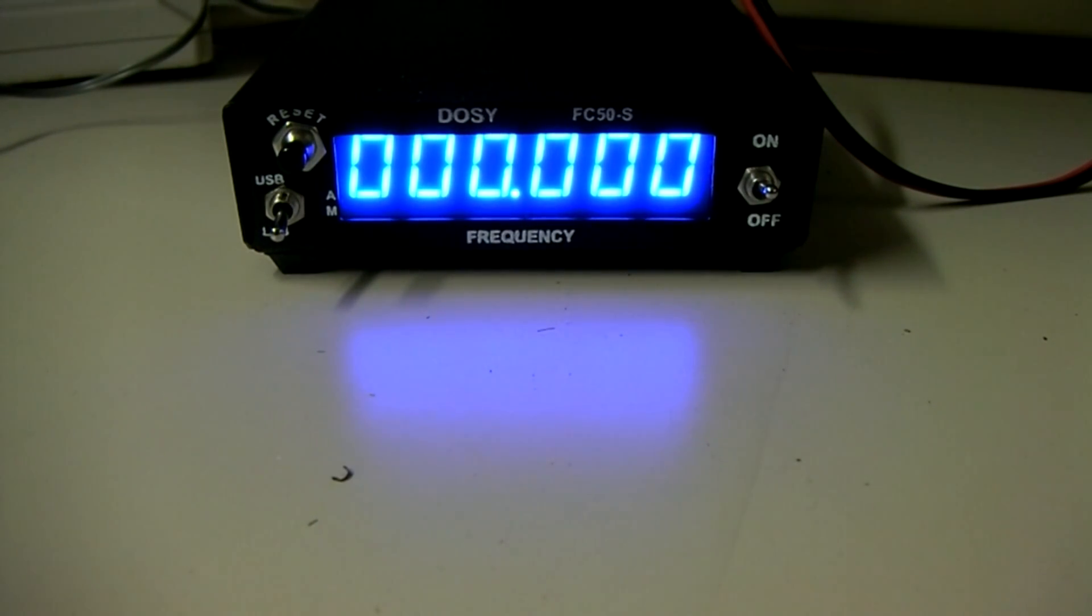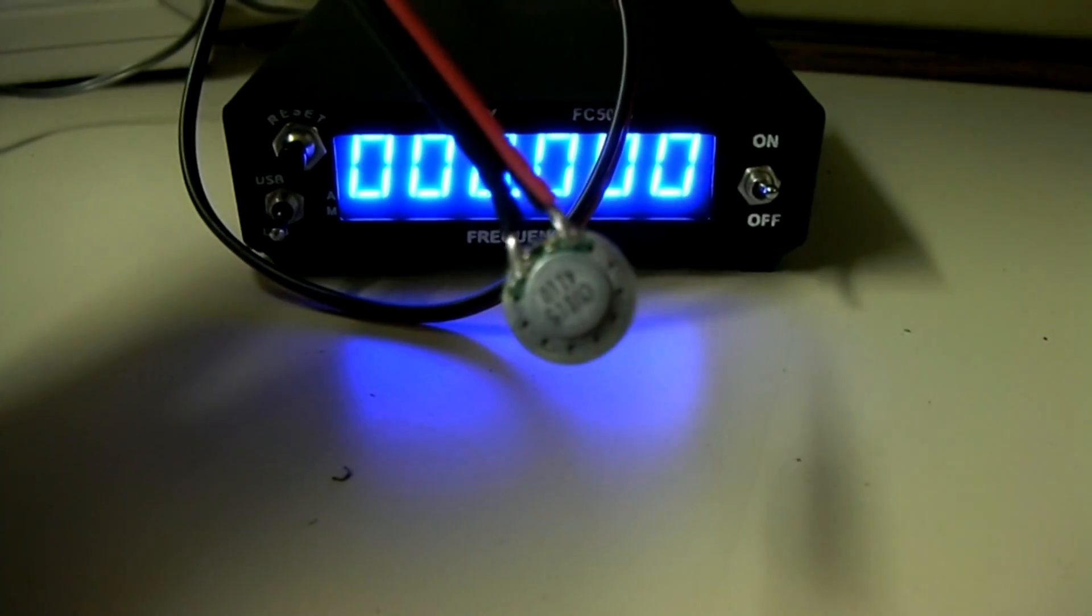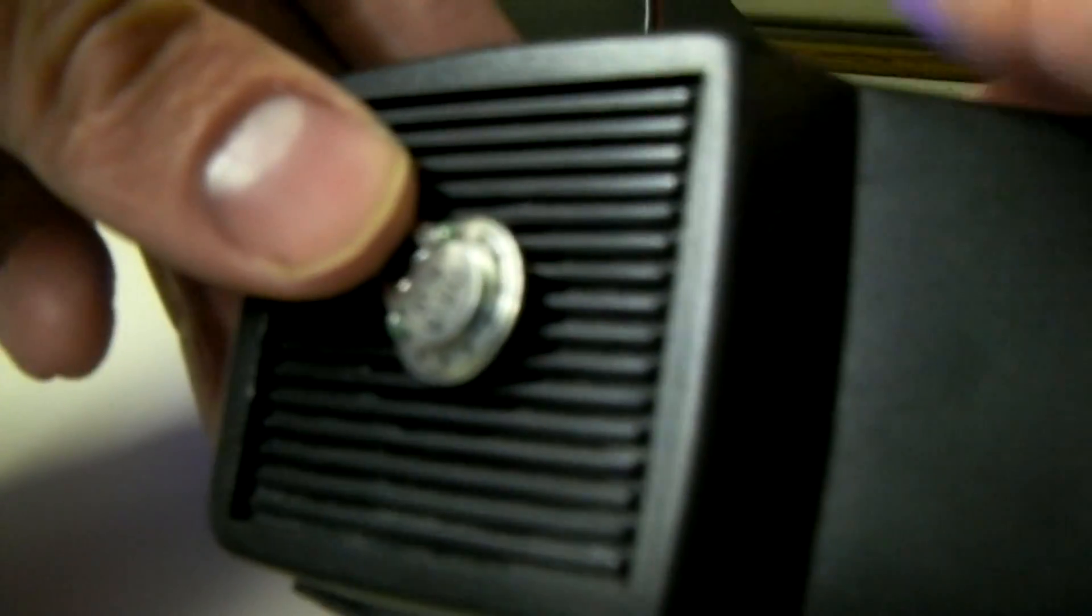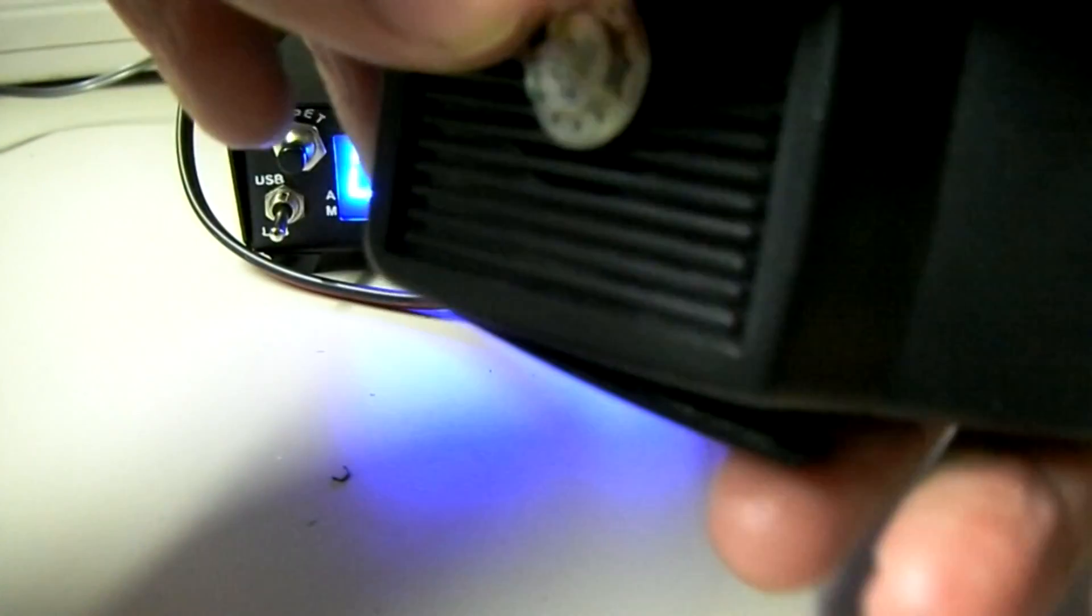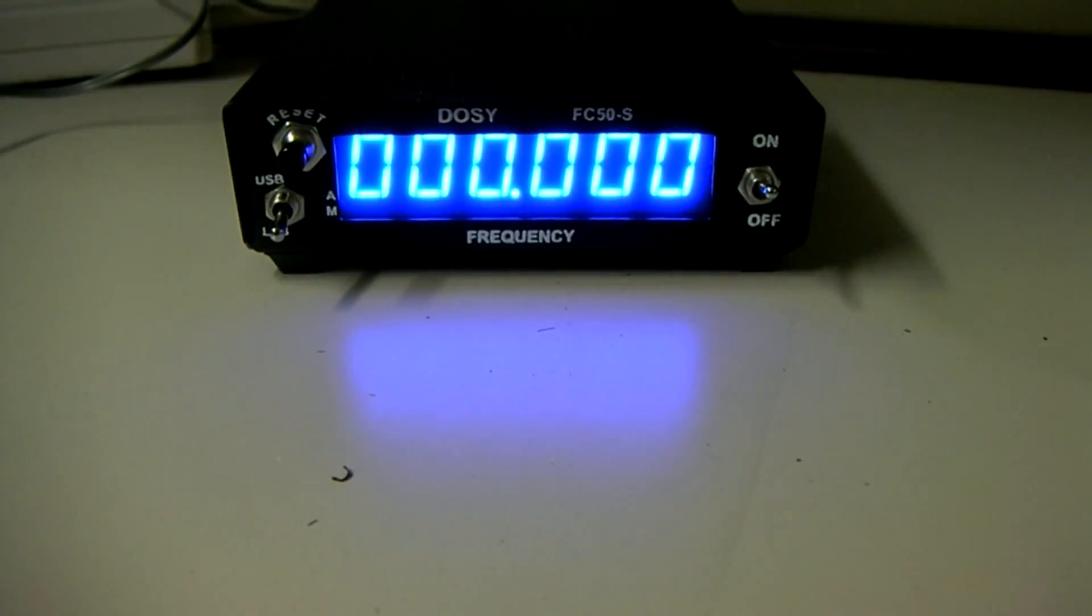It can't pick it up on the frequency counter. So what we're going to do is inject a tone using the speaker that's supplied. This comes out of the back of the Dozey frequency counter. We plugged that in earlier and showed you. And you hold it up against the speaker of your microphone, just like such. And you can just use your thumb to hold it in place.